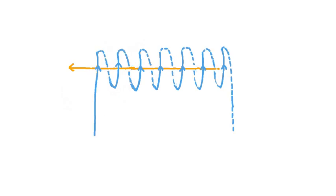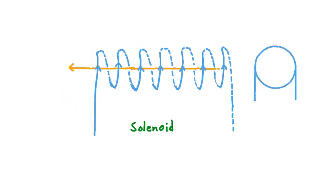Now, what if instead of being separate, these loops were all joined together into one continuous wire? We would find that the magnetic field created is essentially the same as that created by our several loops. The name we give to a wire arranged this way is solenoid. If we looked at a solenoid end-on, it might just look like a circle, but seen from the side, we see all the different turns or loops that are part of this solenoid coil.